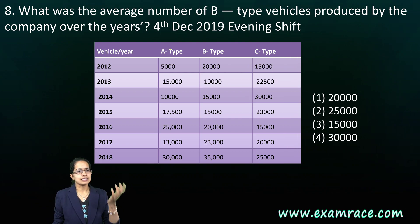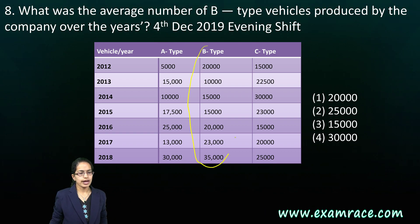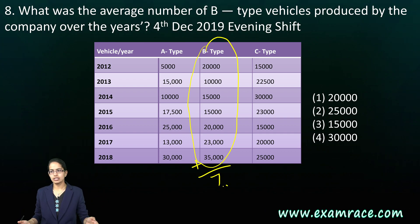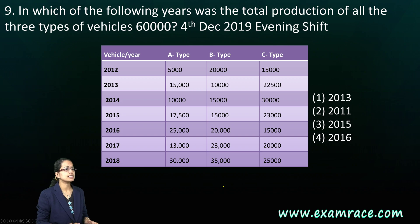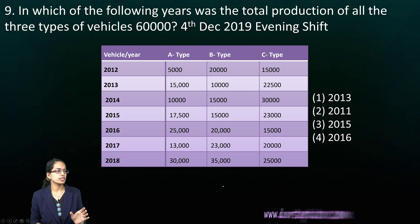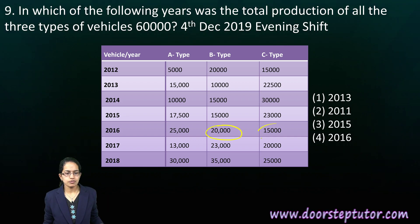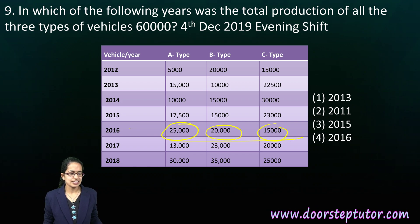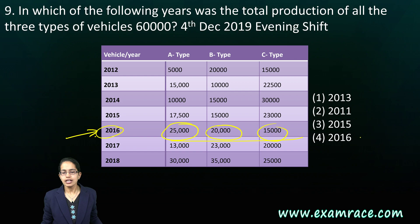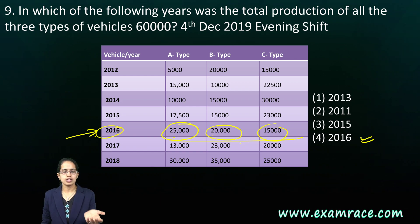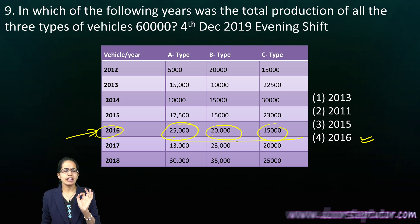Similarly, the average number of B-type vehicles is found by adding all B-type values and dividing by 7. The next question asks: in which year was the total production of all three types of vehicles 60,000? For 2016, adding 20,000 plus 15,000 plus 25,000 gives 60,000. So 2016 is the right answer — a very direct question.